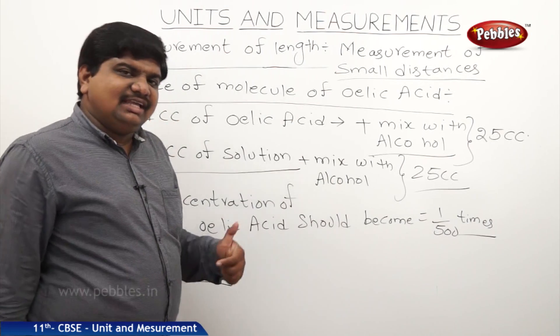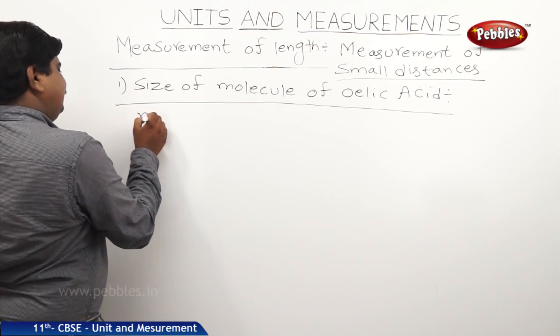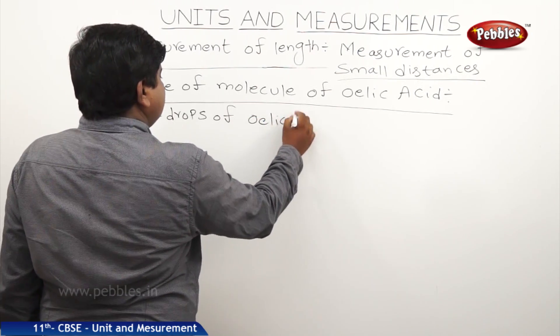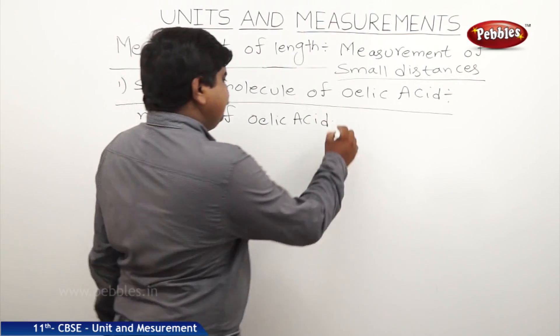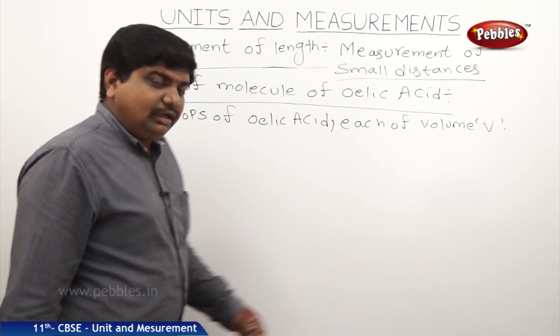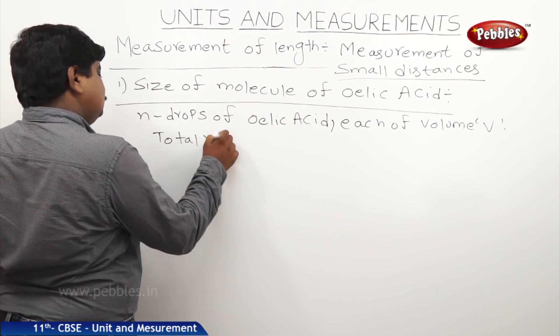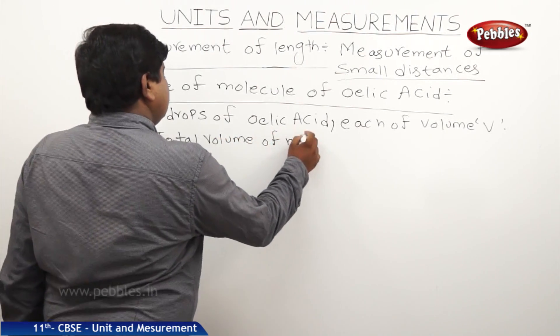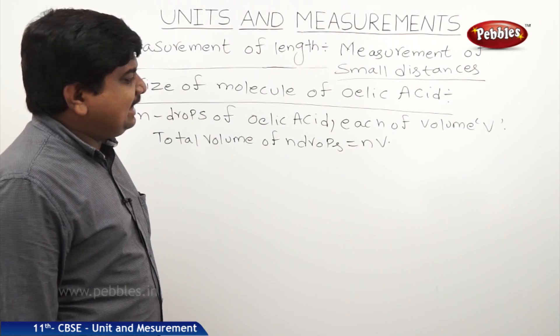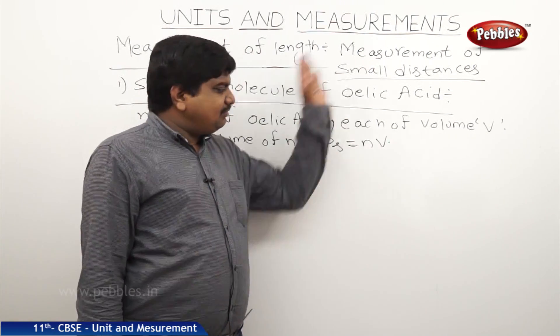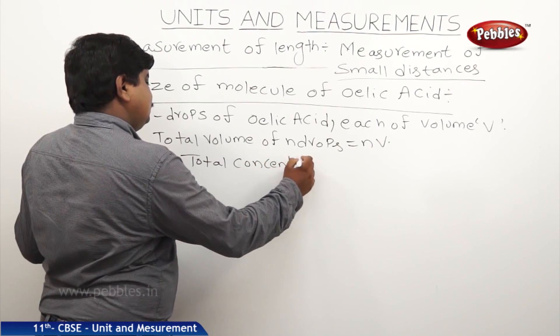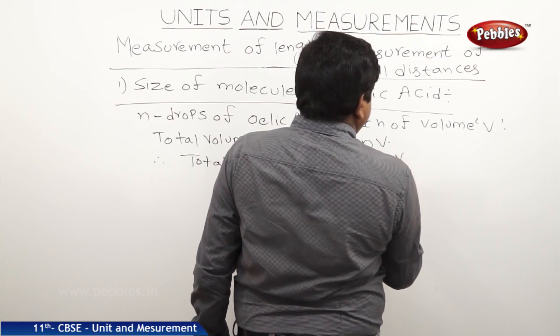So let us take n drops of oleic acid, each of volume V. Total volume of n drops is nv. But the concentration and volume of the oleic acid should become 1 by 500 times of the original. Therefore, the total concentration is equal to nv by 500.